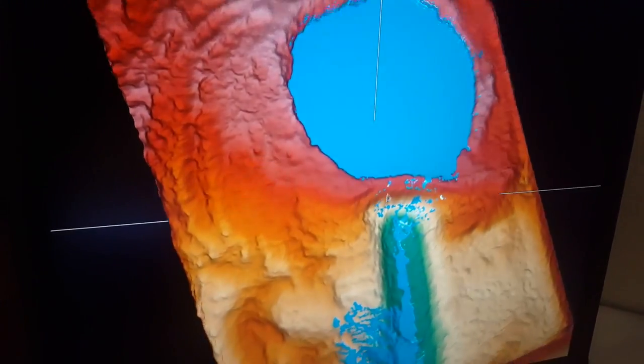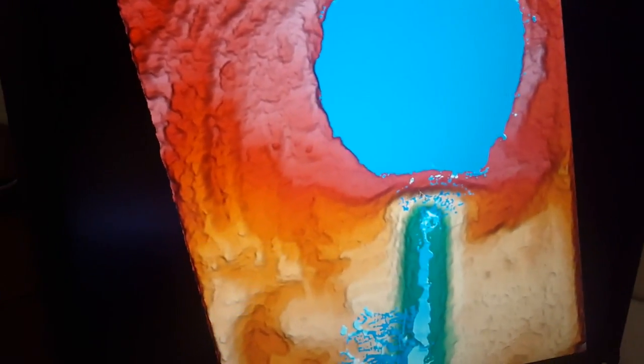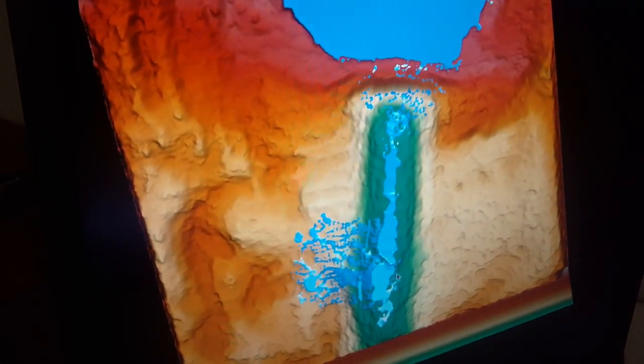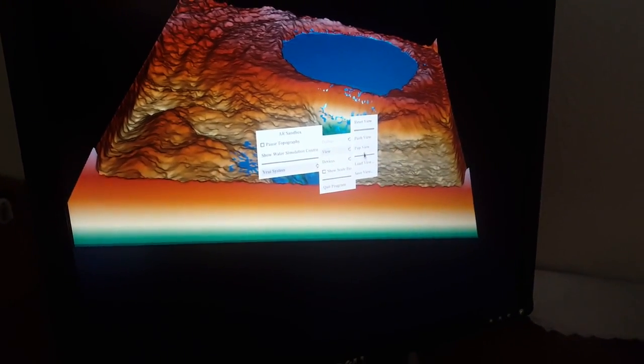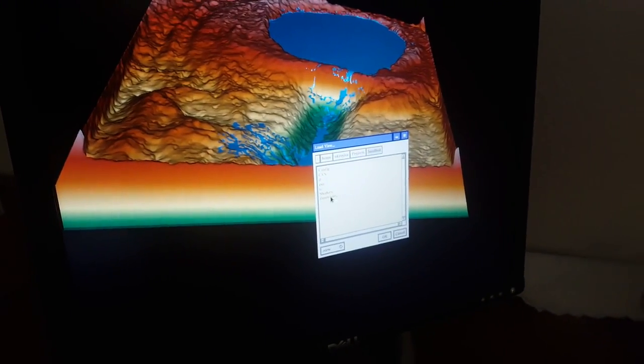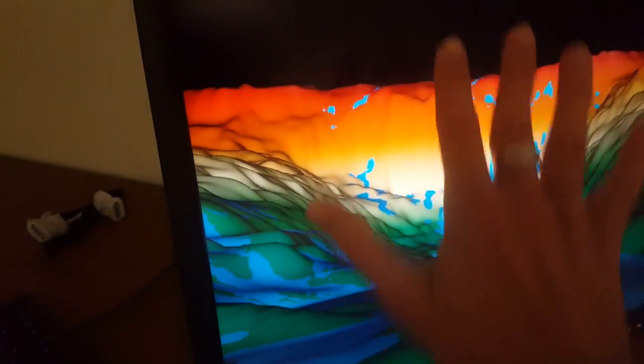So what I want to do now is see what the dam failure looks like from a poor observer who is standing in that outflow channel down there. I'm going to load a view that I made where I'm placing myself at one-to-one scale down in that little valley. So we're looking straight up to that river up at the dam.